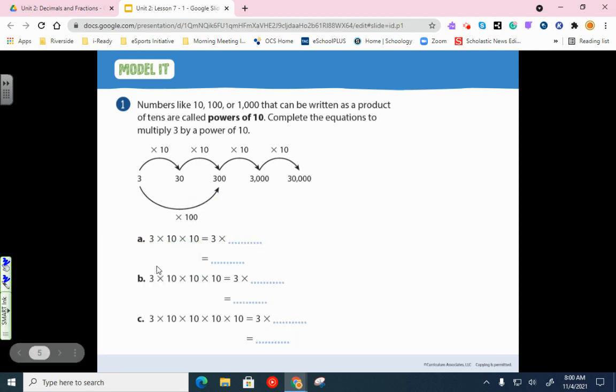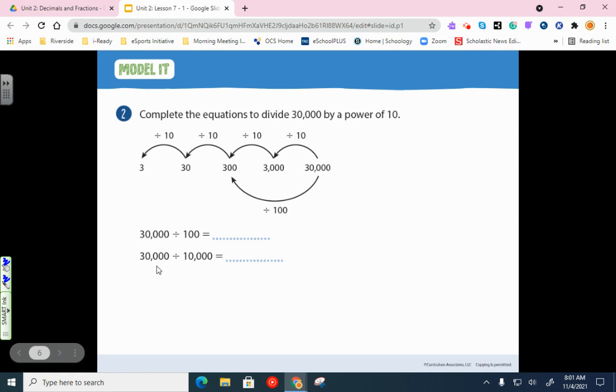So let's look down at 2. Alright, complete the equations to divide 30,000 by powers of 10. So now we're going backwards. And this is just to show you that the same pattern is true here. So we've got 30,000 here, and we're dividing by 100. And notice where it ends up here. It ends up on 300 because basically when we divide it by 100, see that we had those two zeros there?